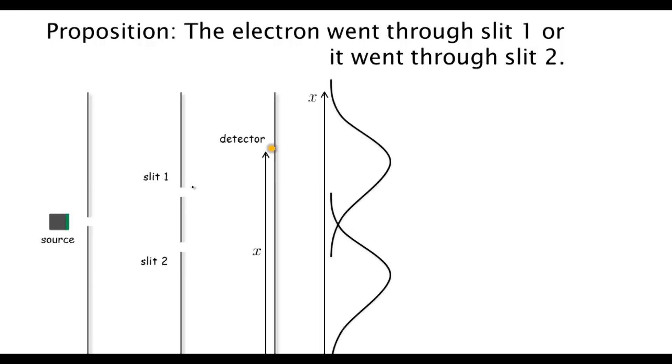We can create a new curve p1' of X, which is how many times did we see an electron that we detected went through slit 1 and then ended up at X.